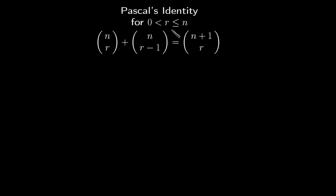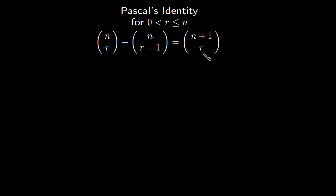In this video, we want to prove the Pascal triangle identity: if r is strictly greater than zero but less than or equal to n, then n combination r plus n combination r minus one equals n plus one combination r.